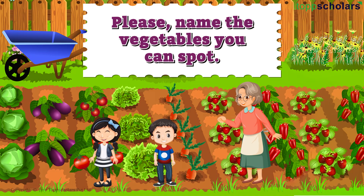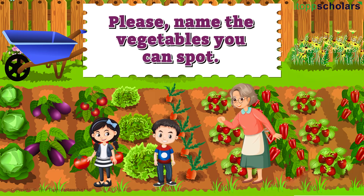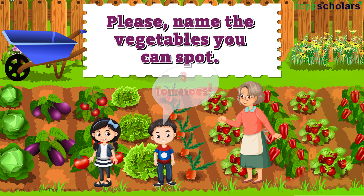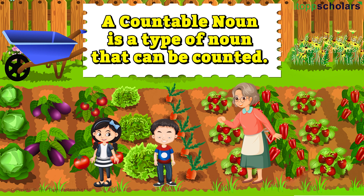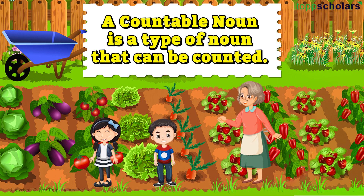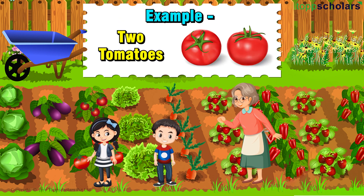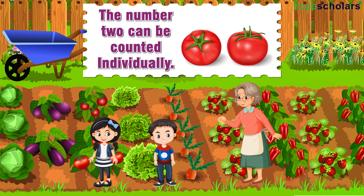Please name the vegetable you can spot. Three tomatoes, two carrots. A countable noun is a type of noun that can be counted. For example, two tomatoes — the number two can be counted individually.